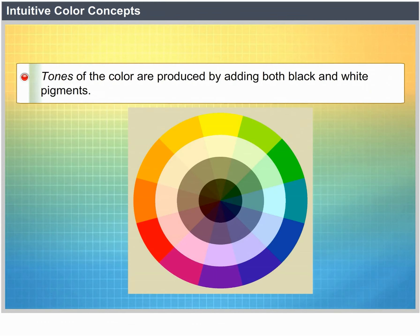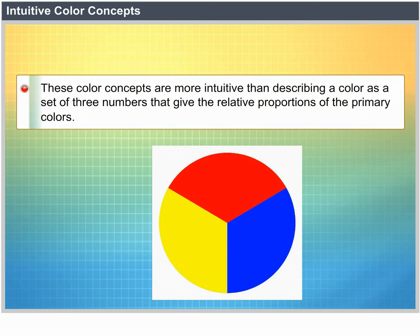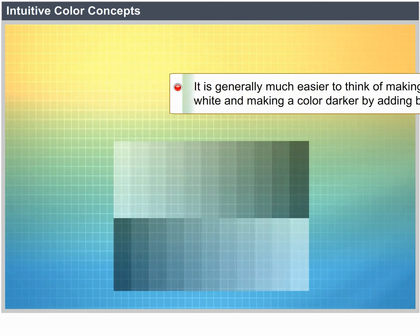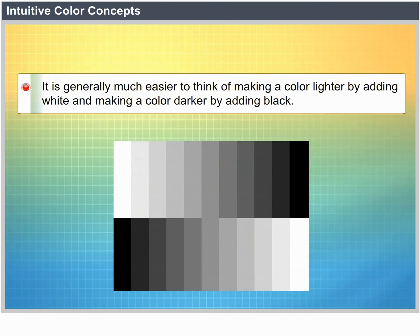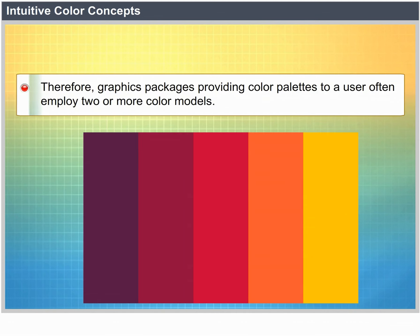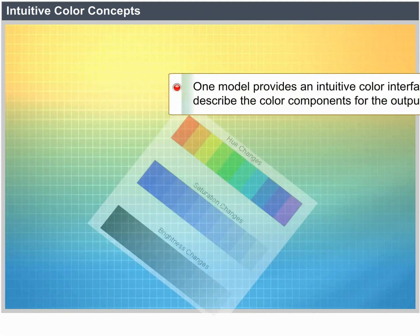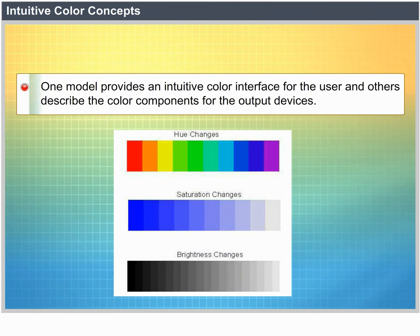These color concepts are more intuitive than describing a color as a set of three numbers giving the relative proportions of the primary colors. It is generally much easier to think of making a color lighter by adding white and darker by adding black. Therefore, graphics packages providing color palettes to a user often employ two or more color models — one provides an intuitive color interface for the user and the others describe the color components for the output devices.